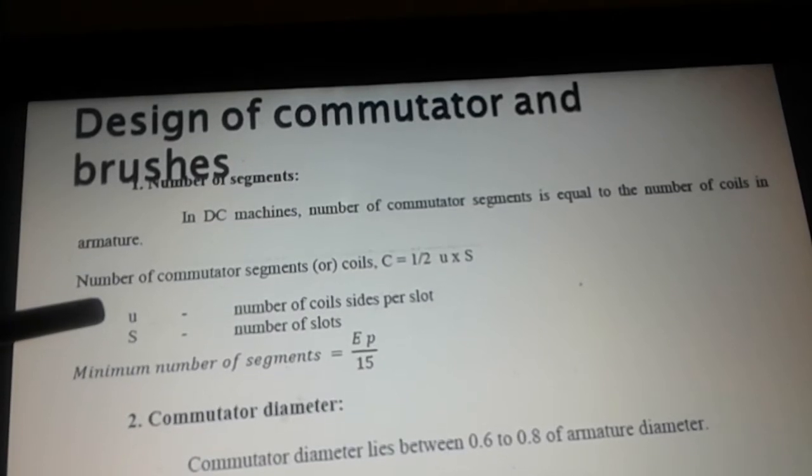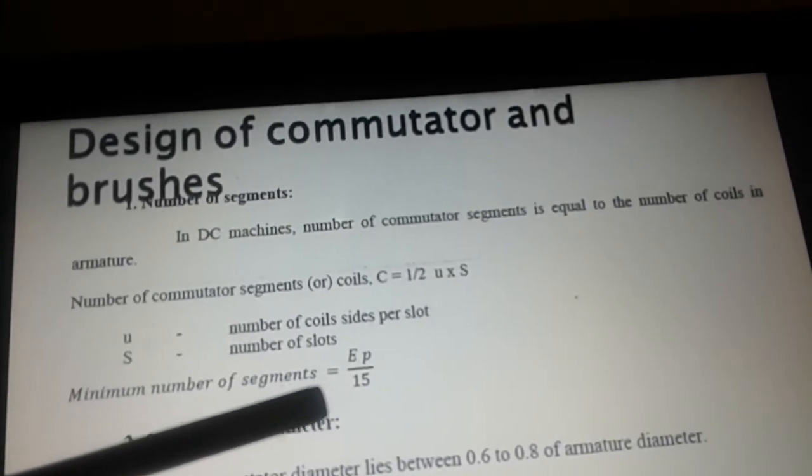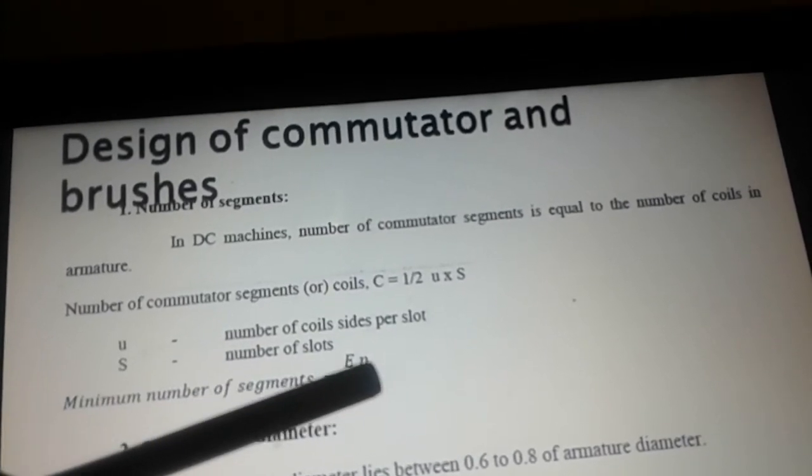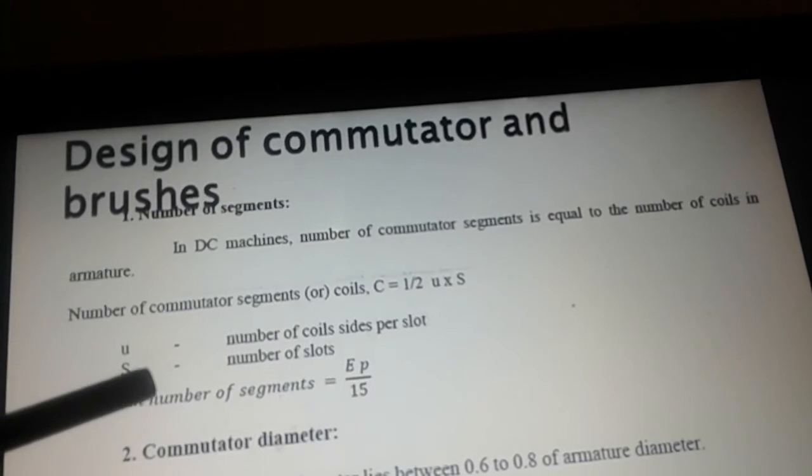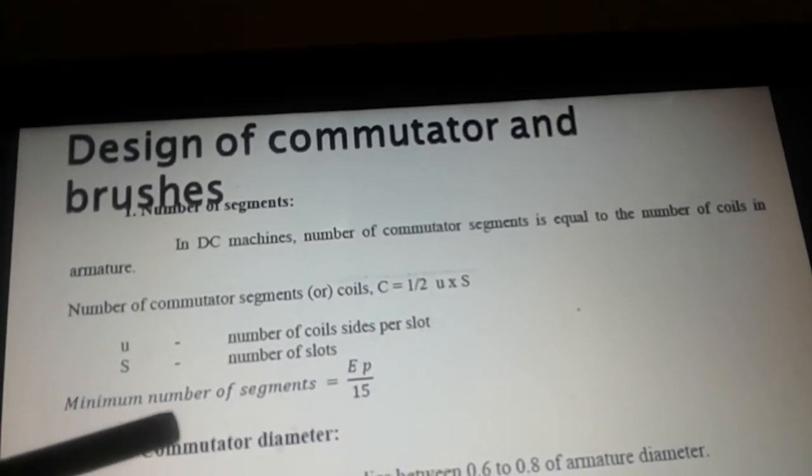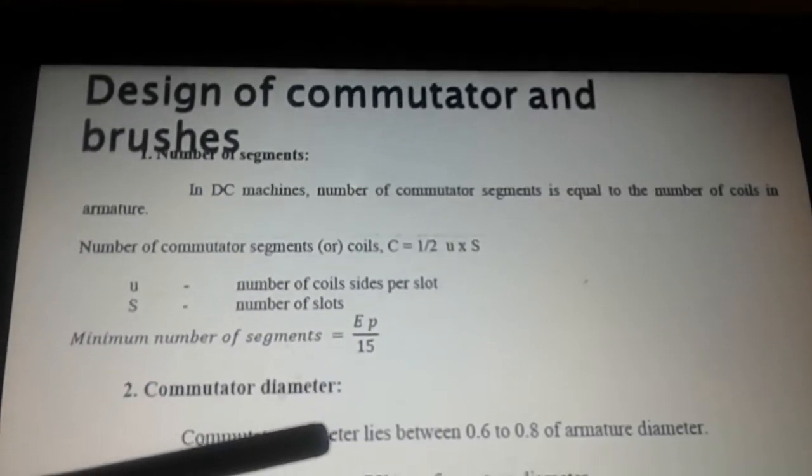So the number of coils or number of commutator segments is equal to half US, where U is the number of coil sides per slot and S is the number of slots. The minimum number of commutator segments is EP divided by 15.